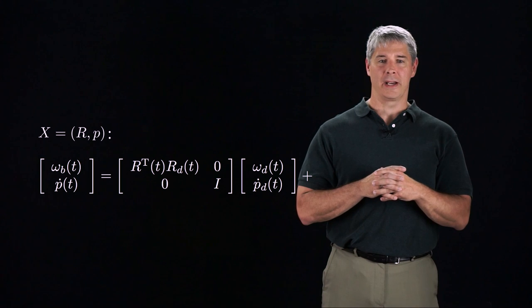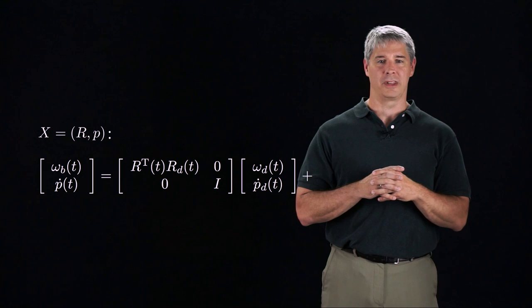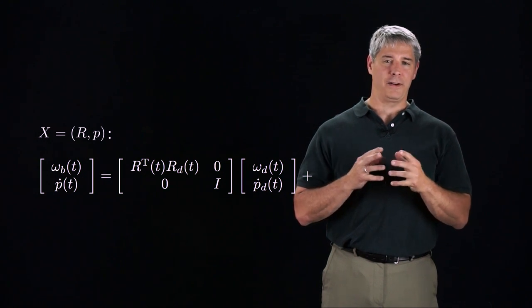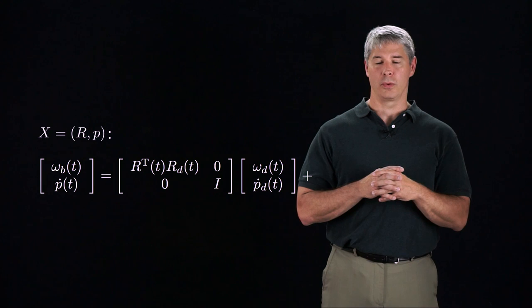The feedforward component for omega B expresses the desired angular velocity omega D in a frame actually oriented with the end effector. The feedforward linear velocity is just the rate of change of the P coordinates.